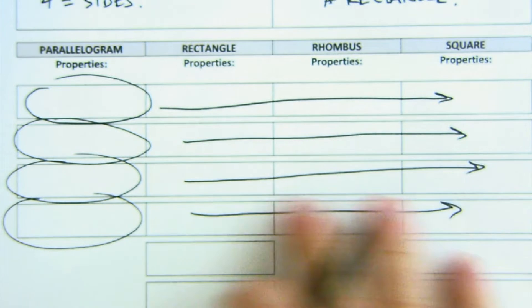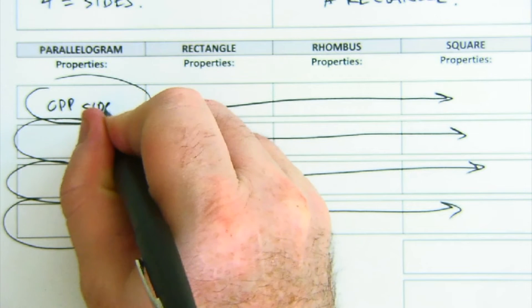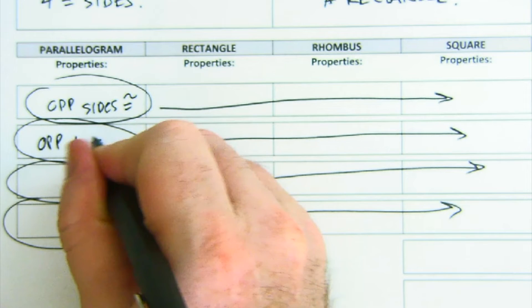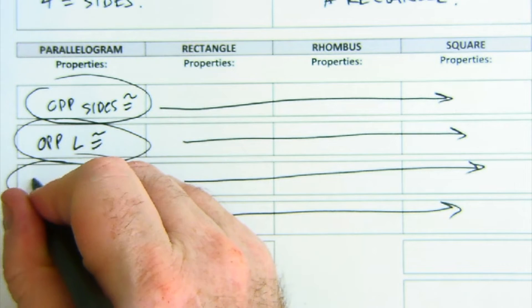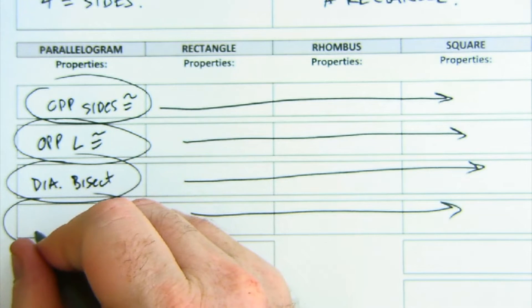These four properties of the parallelogram: opposite sides are congruent, opposite angles are congruent, diagonals bisect each other, and also the consecutive angles are supplements.